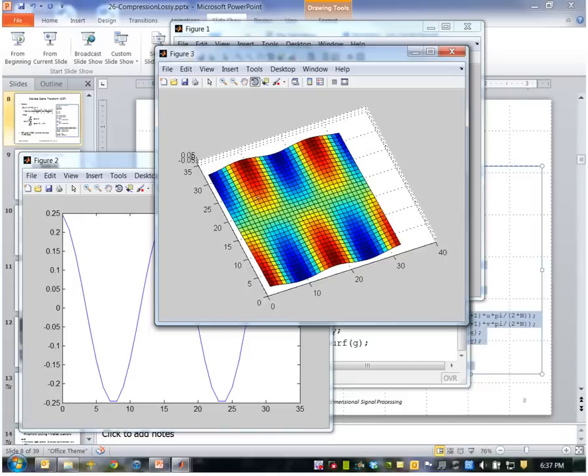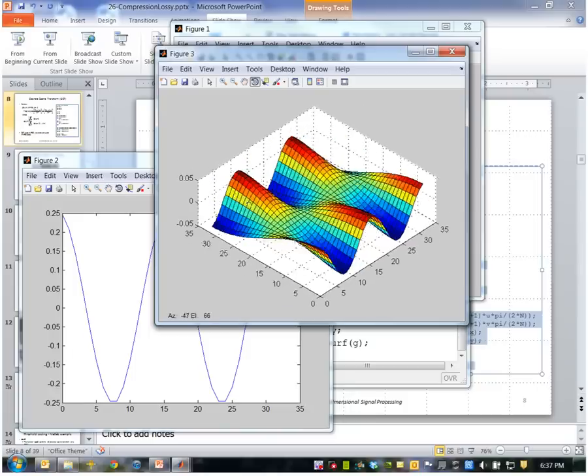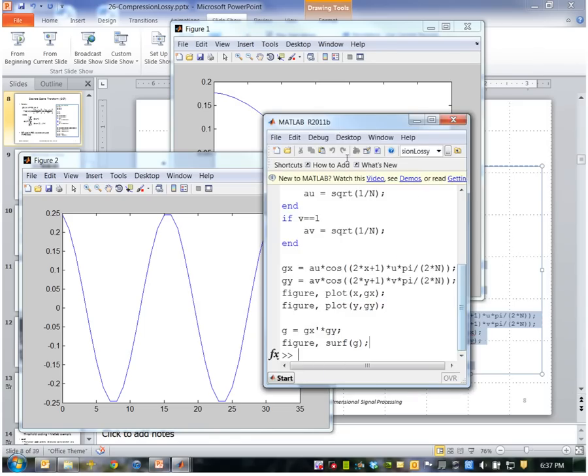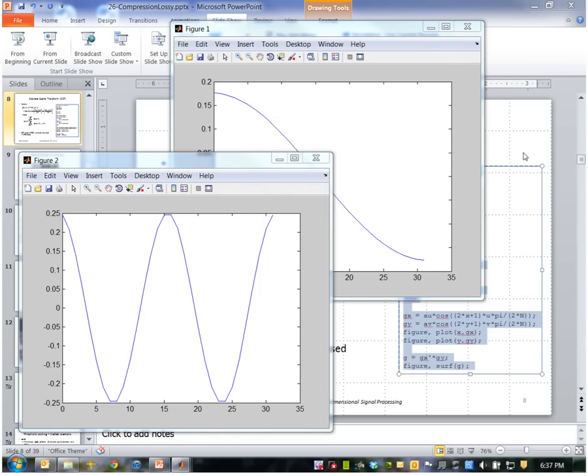If the image had basis functions that look like this, it would yield efficient compression.